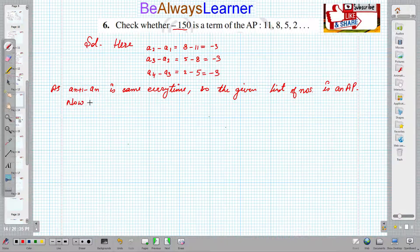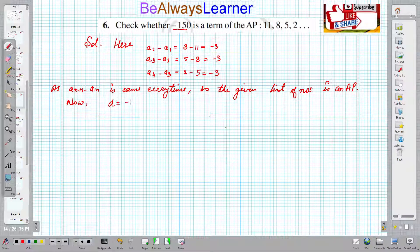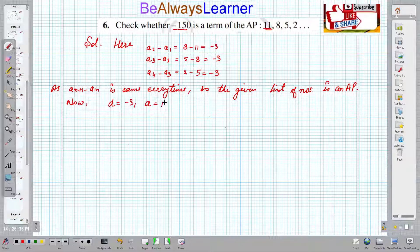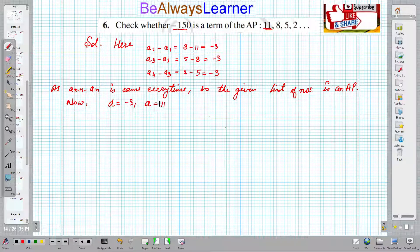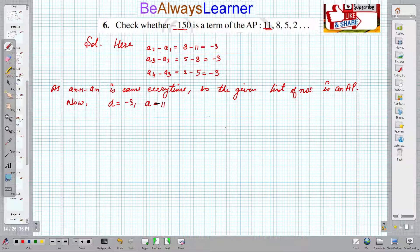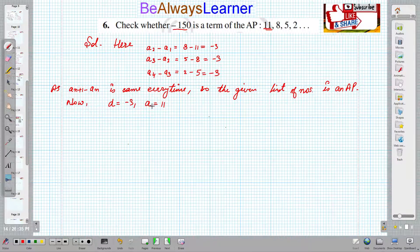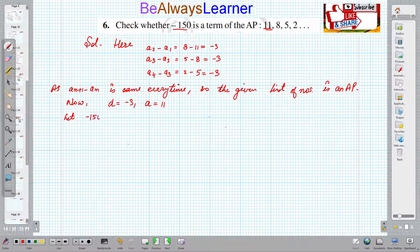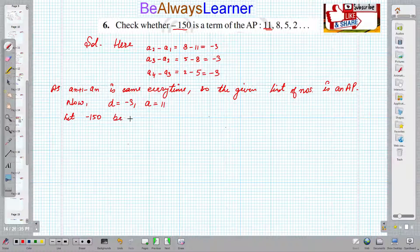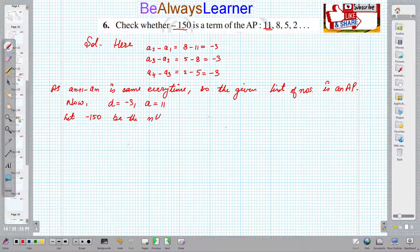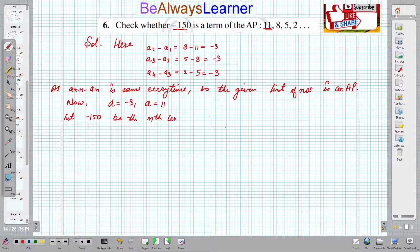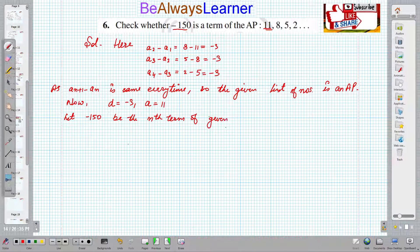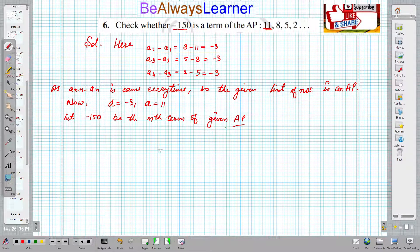Now we know that D is minus 3 and A is the first term which is 11. So we have the first term and difference given. Let us suppose that -150 is the nth term of the given AP.